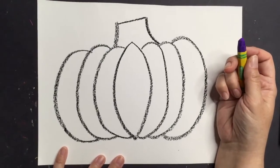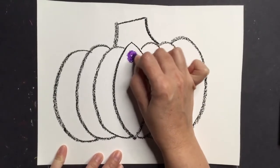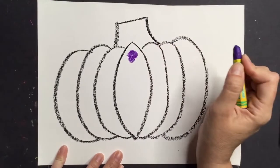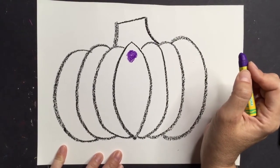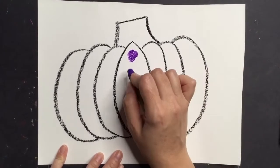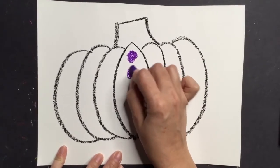Luego, puedes decorar la calabaza con puntos, como Yayoi Kusama. Puede hacer que los puntos sean todos de un solo color, o puedes elegir muchos colores diferentes. Puedes hacerlos grandes o pequeños. Tú decides.